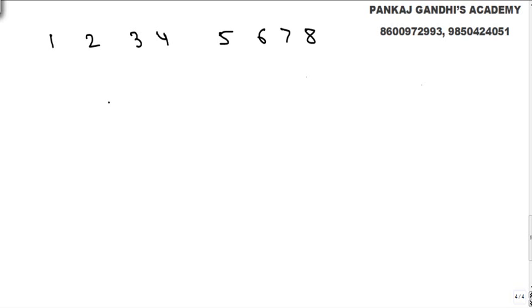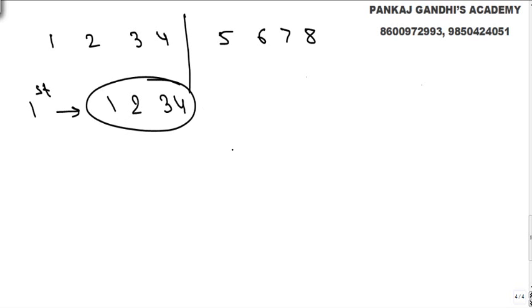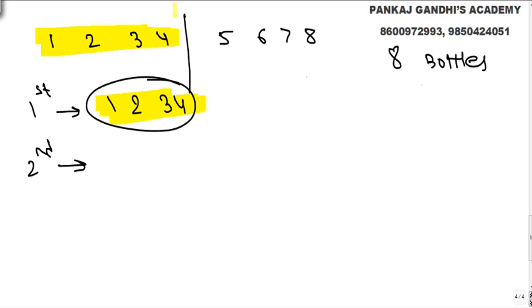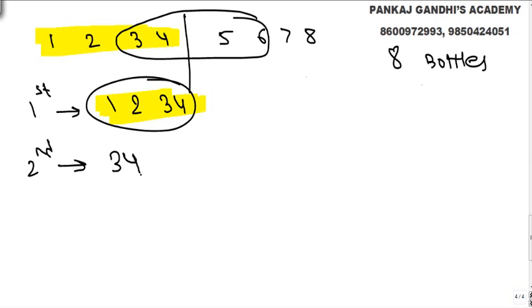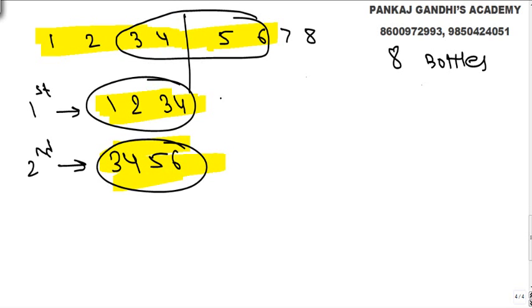If there are eight bottles, we make half of that. To the first rat, we give a mixture of bottles one, two, three, four. Then we make half again — to the second rat, we give the mixture of three, four, five, six — keeping three and four common between them. The problem is that three and four are common, so for the third rat, we give one out of one or two, one out of three or four, and one out of five or six.